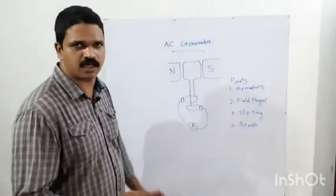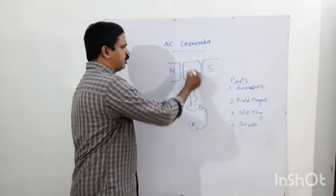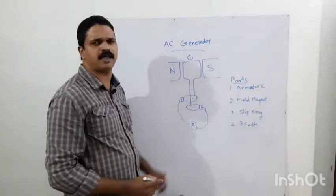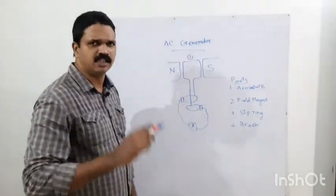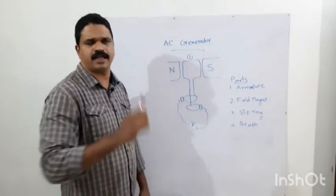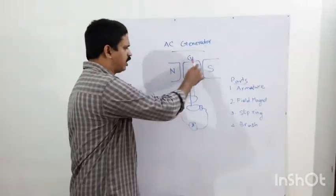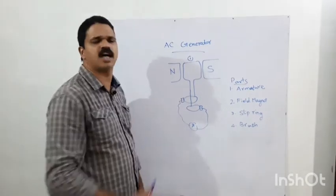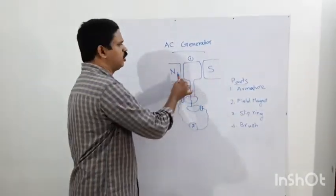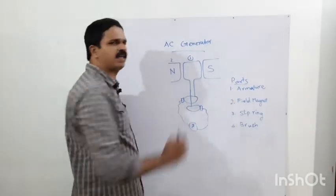What does the armature mean? This is the armature — the first part. The armature means you have an iron rod wound in a coil. You have an iron rod in the coil — that is the armature. The second part is field magnets: you have a North Pole and South Pole.